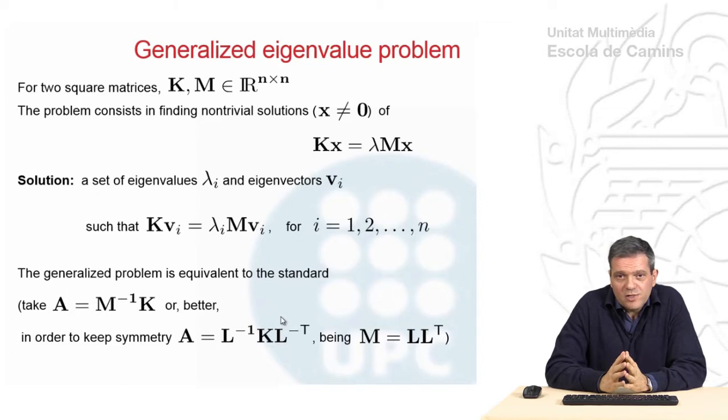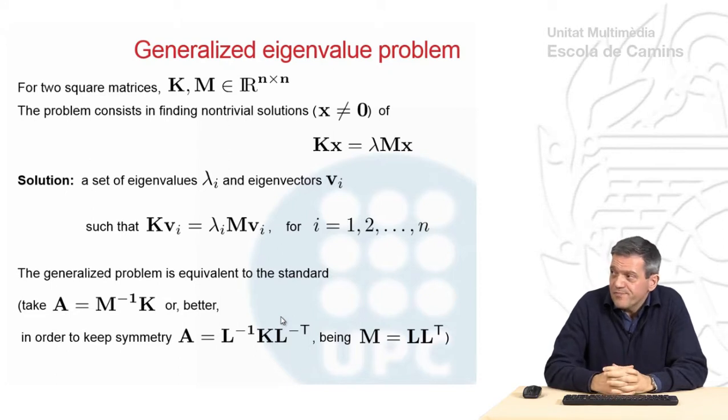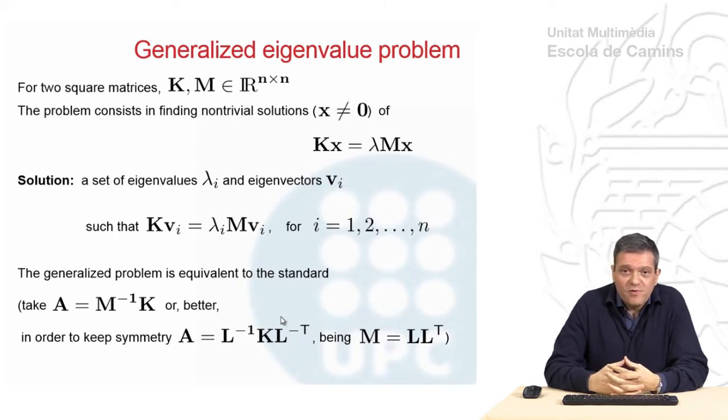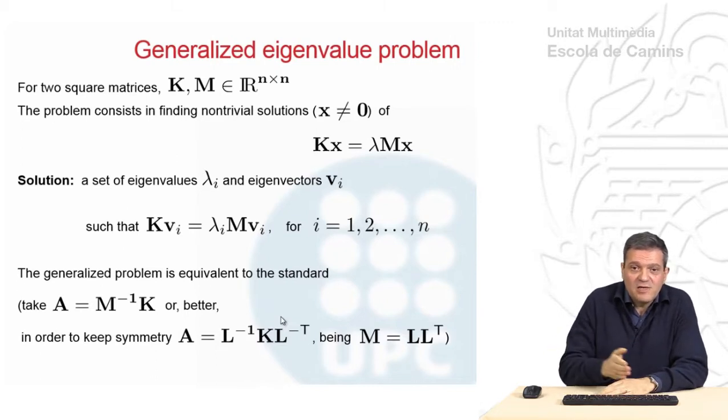What we saw till now was the standard eigenvalue problem. But there is a generalized eigenvalue problem as well, in which you have two input matrices, K and M, instead of A. And the statement of the problem is slightly different because you seek for solutions of the problem K times X equal to lambda MX. And of course you look for non-trivial solutions because again zero is a solution. You have exactly the same type of solutions consisting in a set of lambdas and a set of V's.